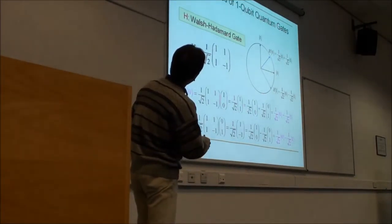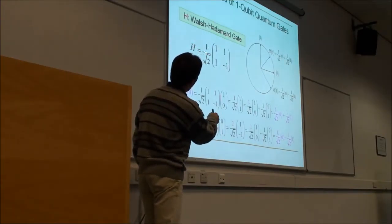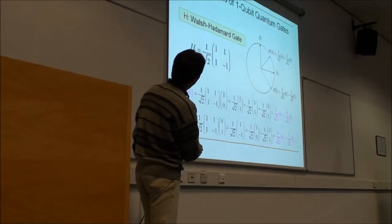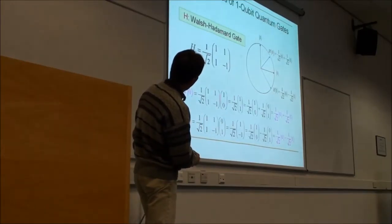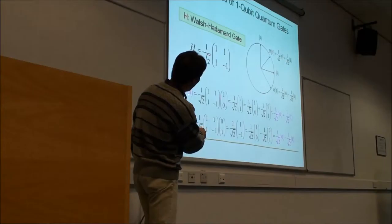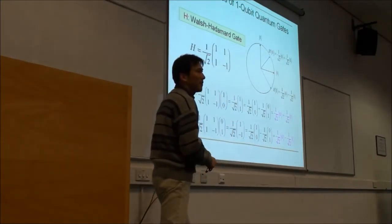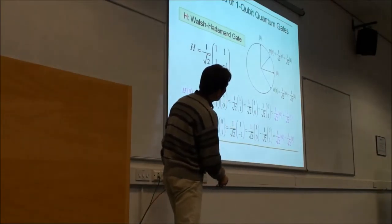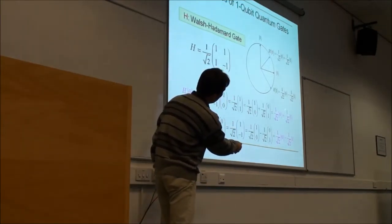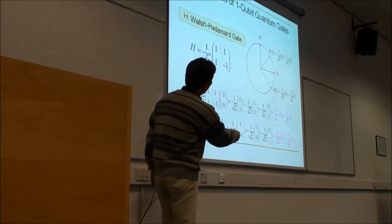Another interesting gate is the Walsh-Hadamard gate. It's the matrix (1, 1, 1, -1) times the normalization coefficient. Bracket 0 becomes the mixture of 0 and 1, and bracket 1 also becomes the mixture of 0 and 1. The difference between them is the plus and minus sign.